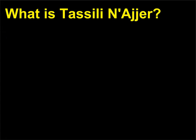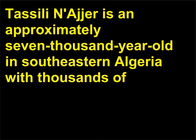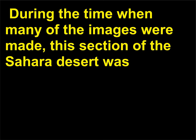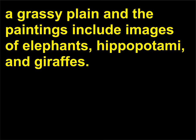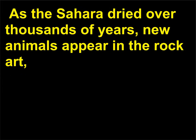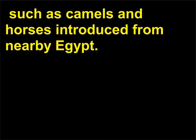What is Tassili-n-Ajjer? Tassili-n-Ajjer is an approximately 7,000-year-old site in southeastern Algeria with thousands of rock paintings and engravings — one of the earliest and most impressive examples of rock art in Africa. During the time when many of the images were made, this section of the Sahara desert was a grassy plain, and the paintings include images of elephants, hippopotami, and giraffes. Later images depict men, women, and children gathered around small houses with cattle grazing nearby. As the Sahara dried over thousands of years, new animals appear in the rock art, such as camels and horses introduced from nearby Egypt.